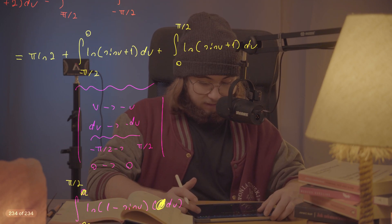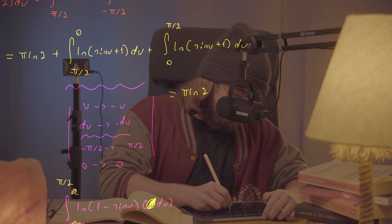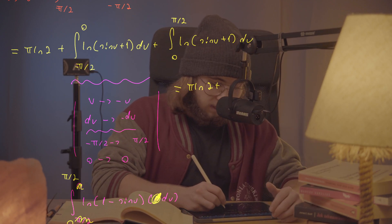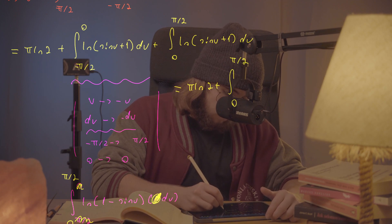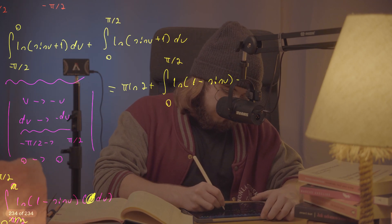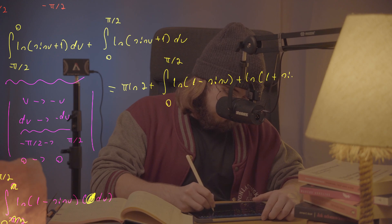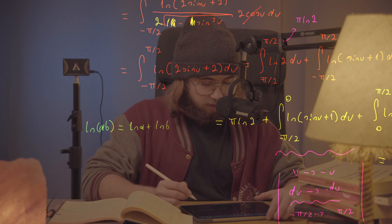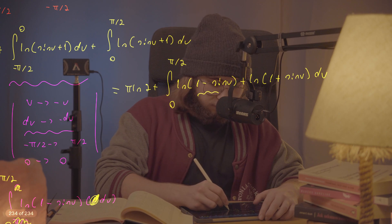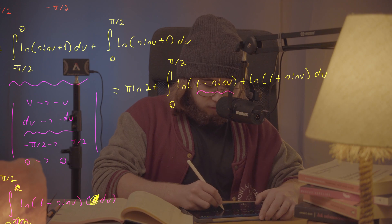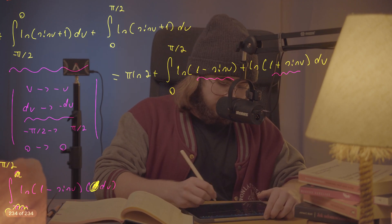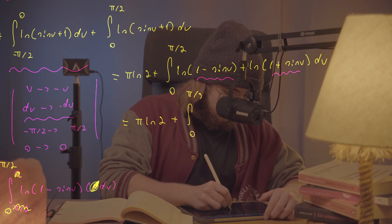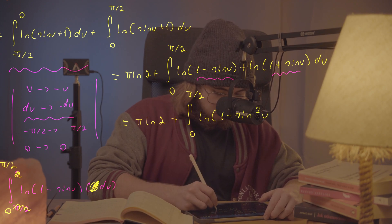Now I combine those two integrals over the same interval 0 to pi over 2. I get pi times the natural log of 2, plus the integral from 0 to pi over 2 of the natural log of 1 minus sine of u plus the natural log of 1 plus sine of u du. Using the log product rule again, I can combine those logs into the natural log of 1 minus sine squared of u, which equals the natural log of cosine squared of u. Bringing the exponent 2 out front gives pi times the natural log of 2 plus 2 times the integral from 0 to pi over 2 of the natural log of cosine of u du.